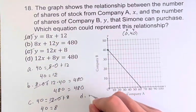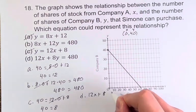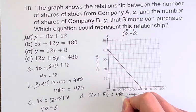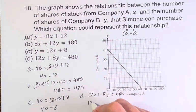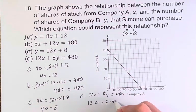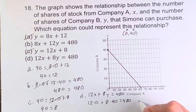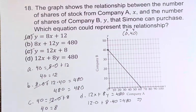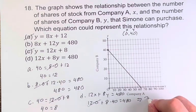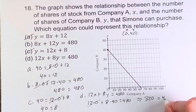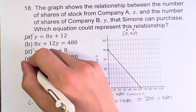And finally D, 12x plus 8y is equal to 480. 12 times 0 plus 8 times 40 is equal to 480. The 0 term disappears just like with all the others. 8 times 40 is 320 which is not equal to 480. Therefore it is not D.